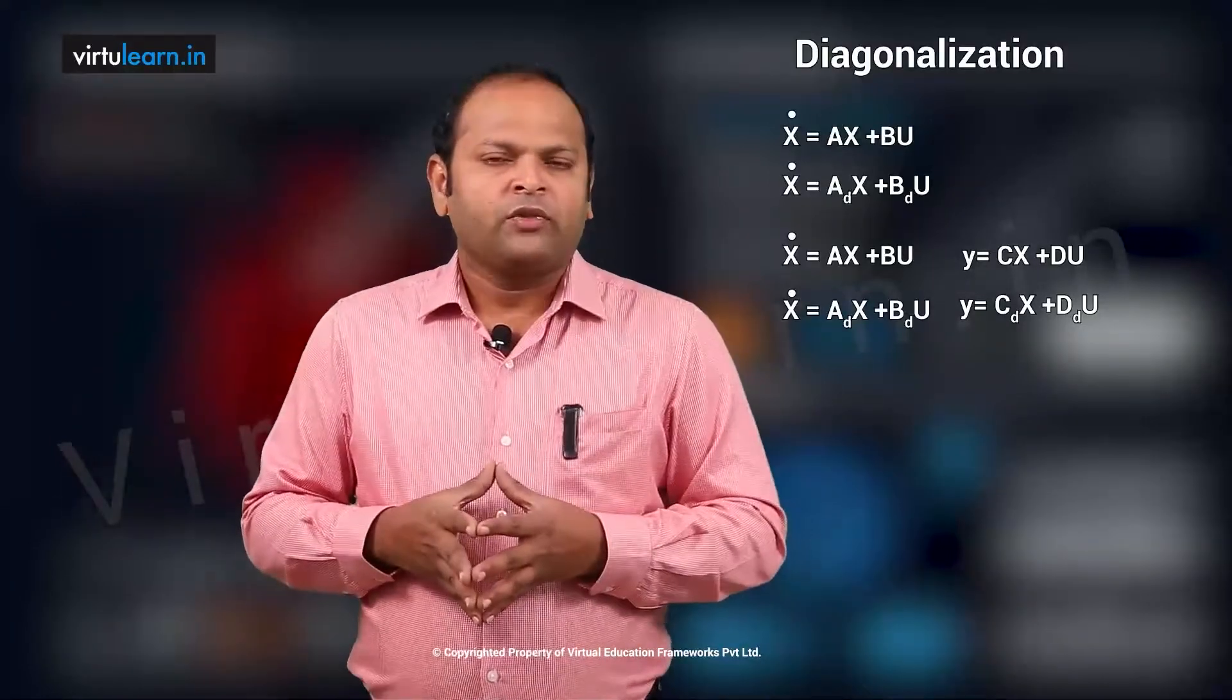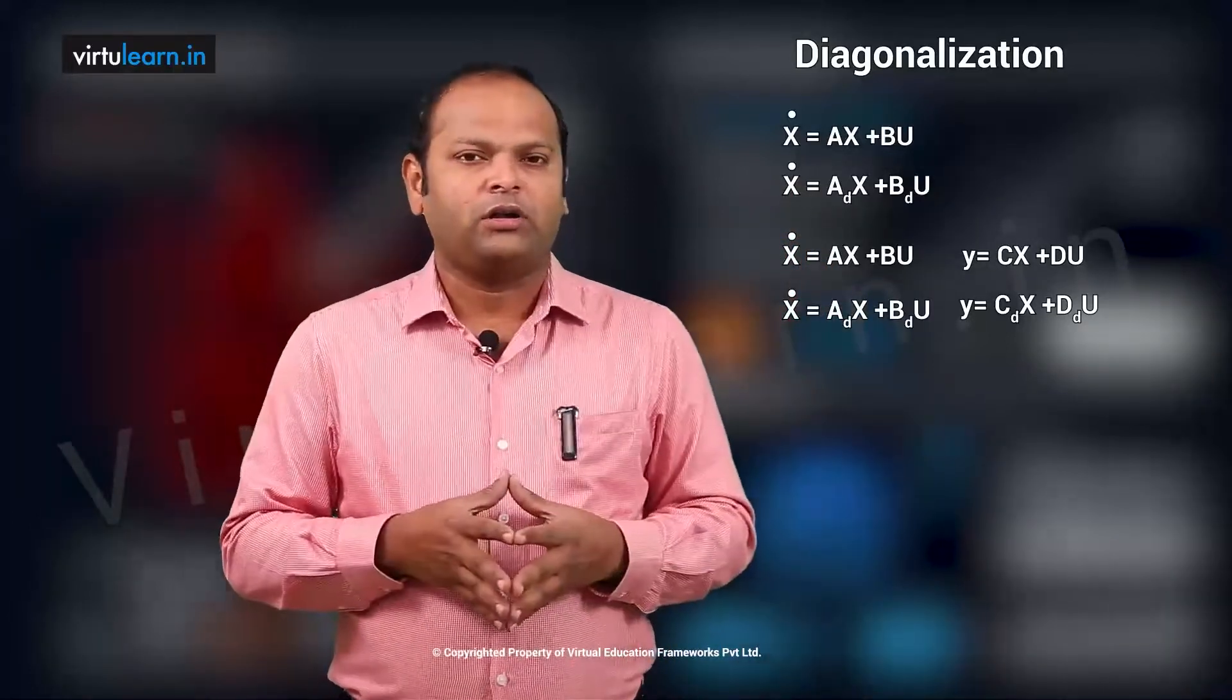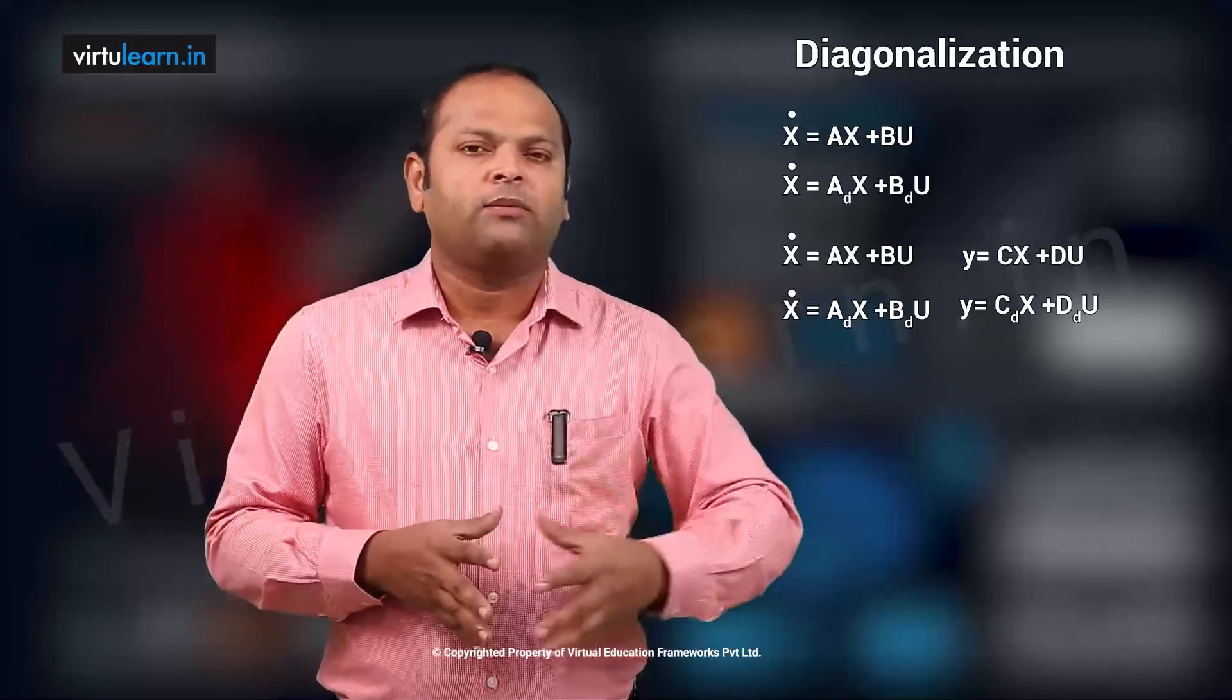Now how to do that? So to convert any state space model into a diagonal form of the model, then we can use the model matrix.